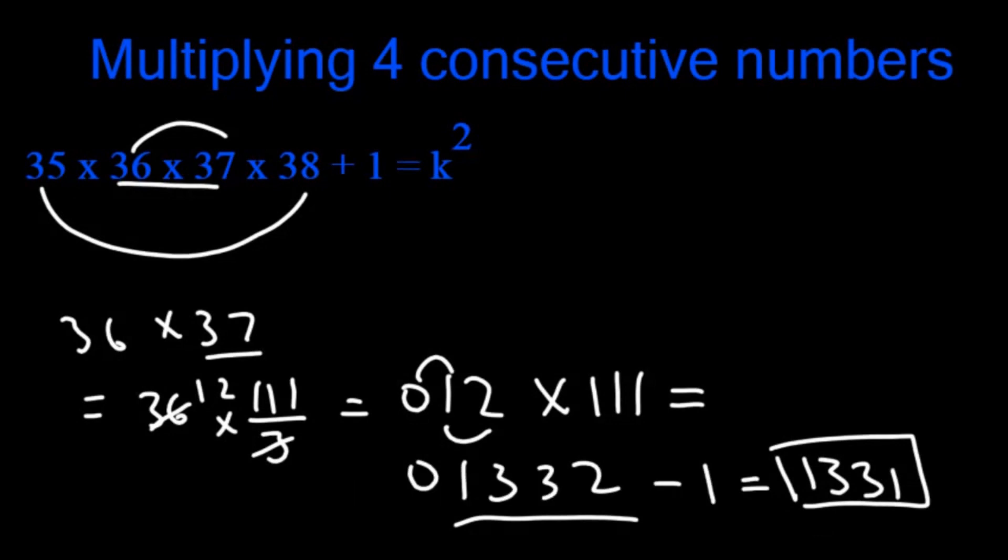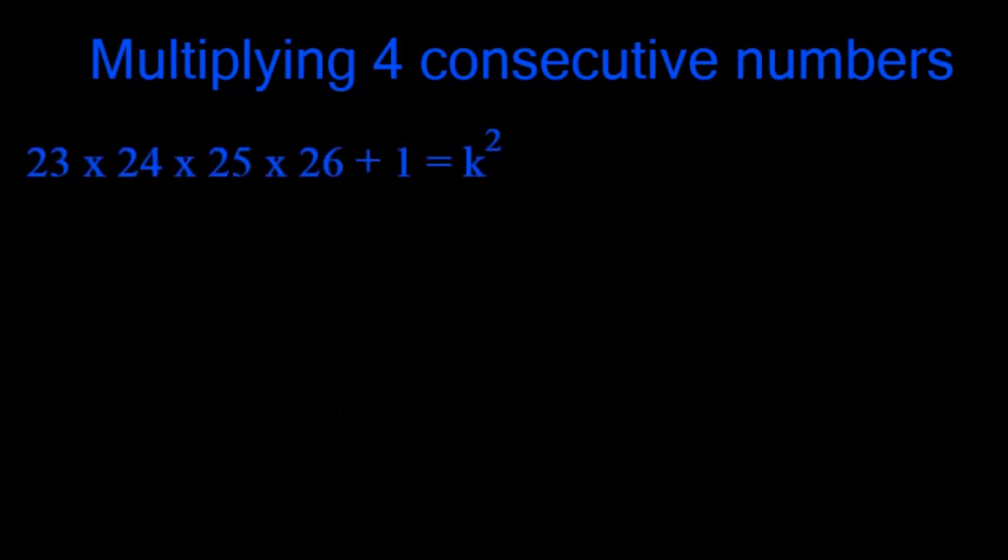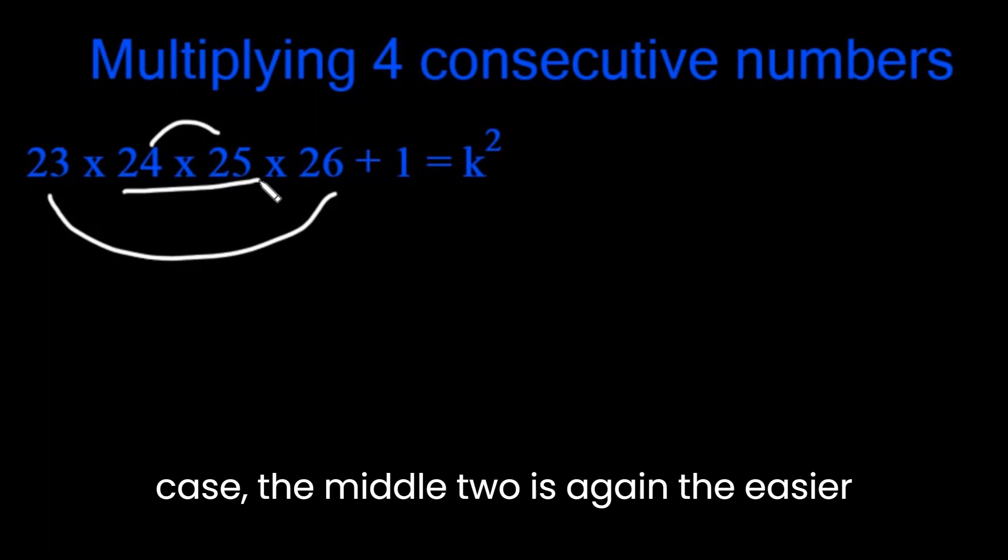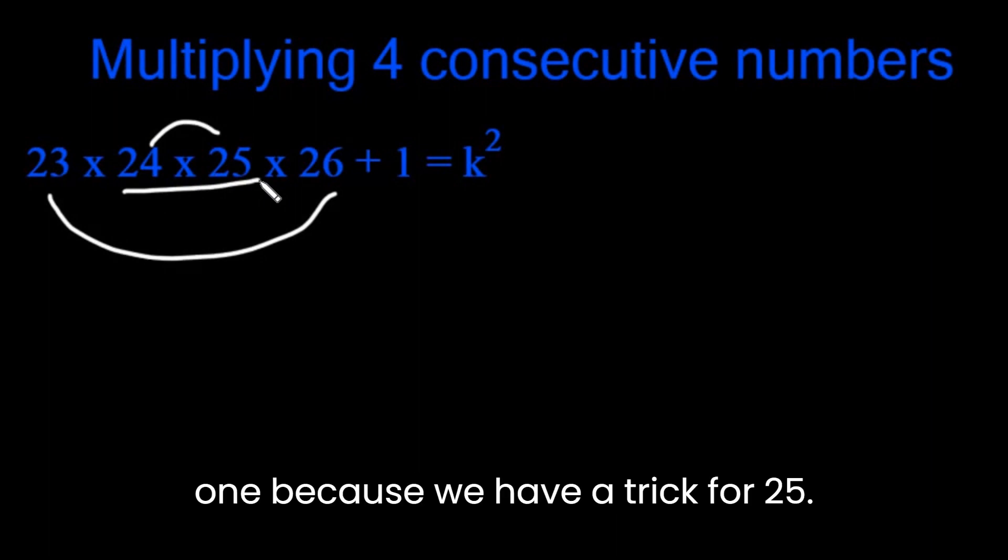Let's look at one last example. Again, we have to either multiply the first and the last or the middle two. In this case, the middle two is again the easier one because we have a trick for 25.